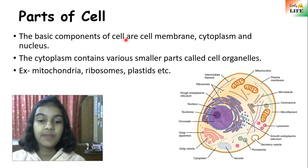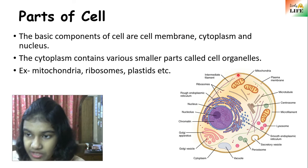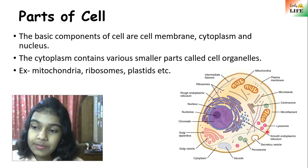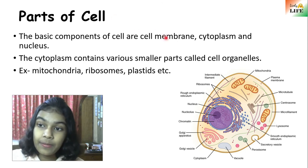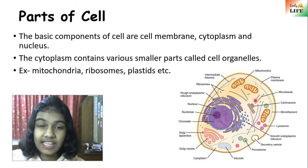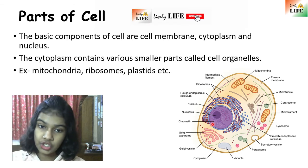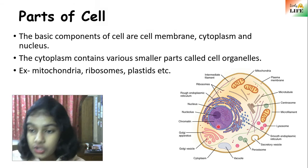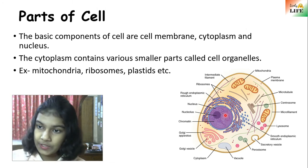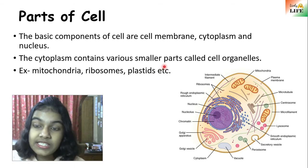Cell membrane is a membrane that covers and protects the cell and gives it shape. Cytoplasm is the jelly-like substance present inside the cell. And the nucleus is a dense structure generally found in the middle of the cell. We're going to learn about all three of these in detail. The cytoplasm contains various smaller parts called cell organelles.